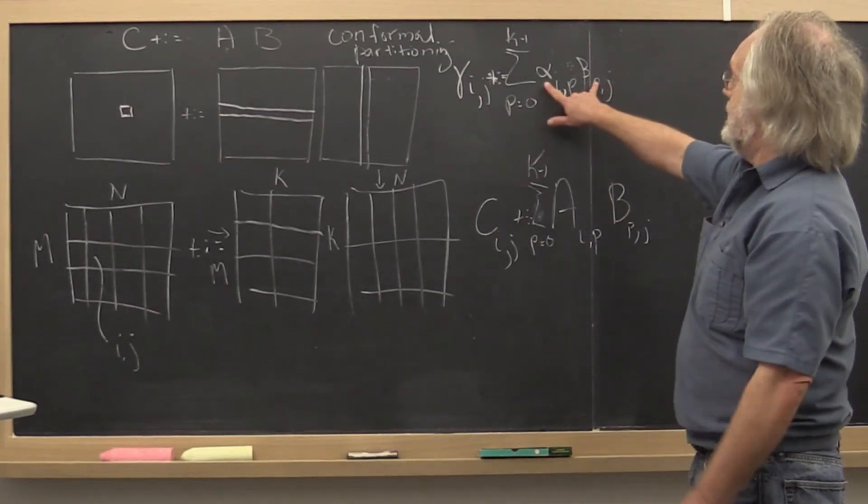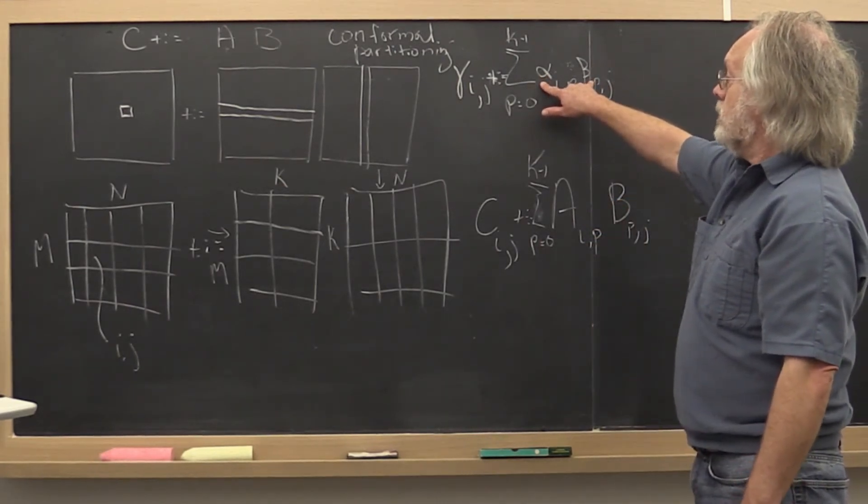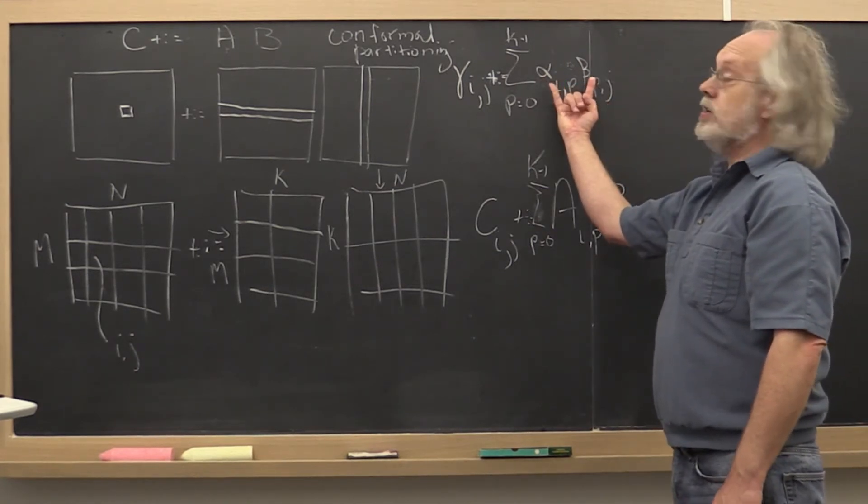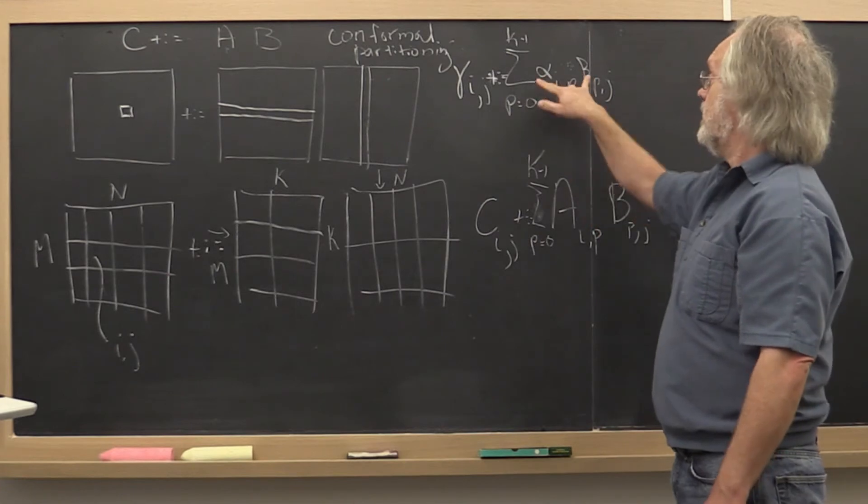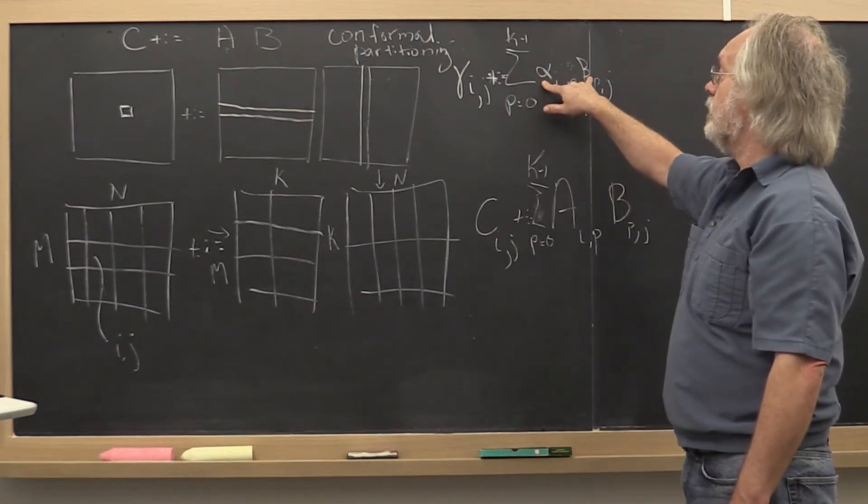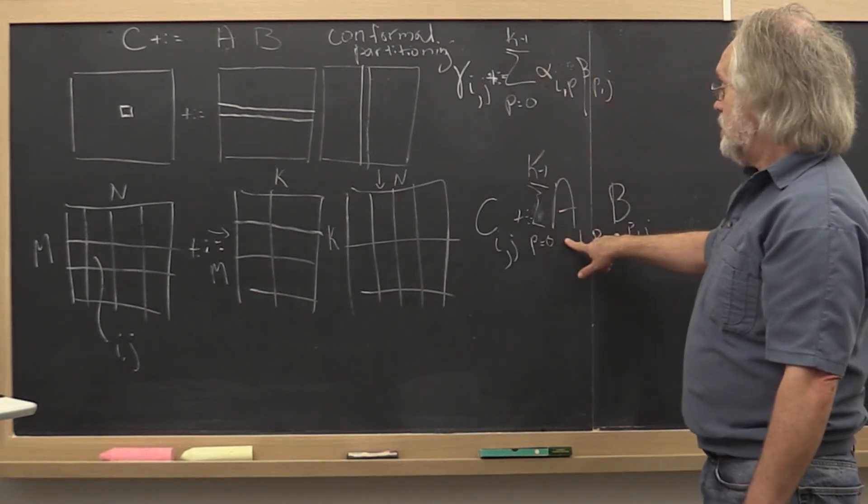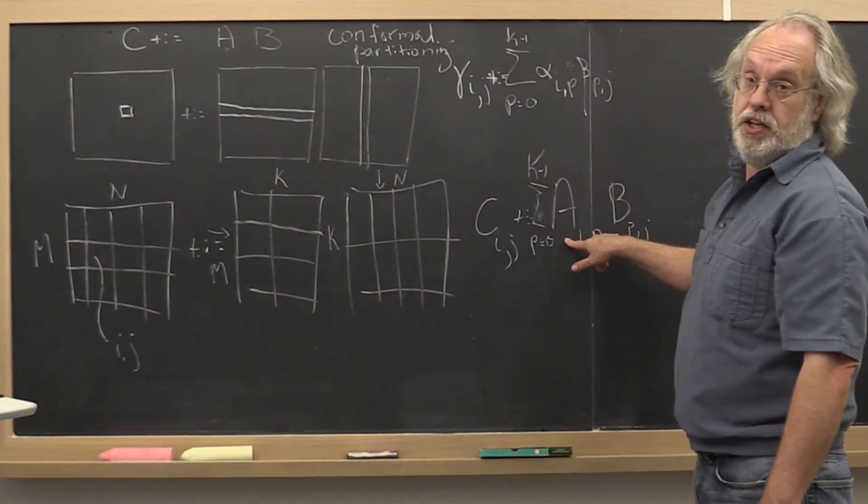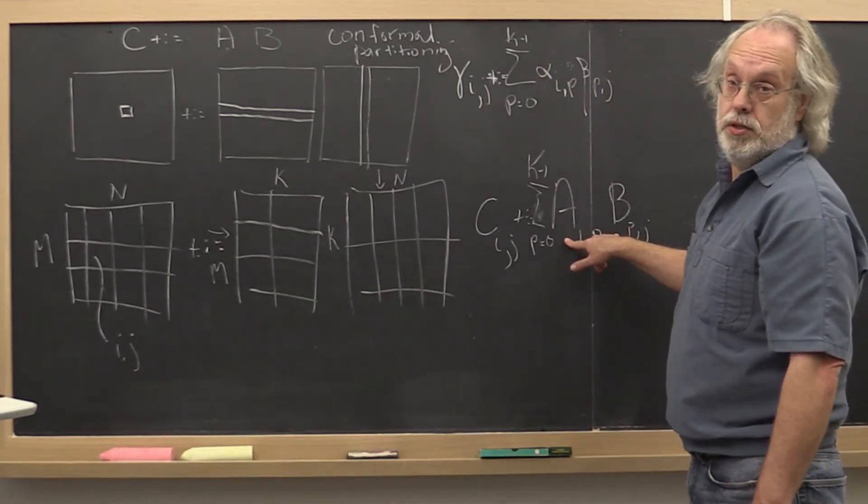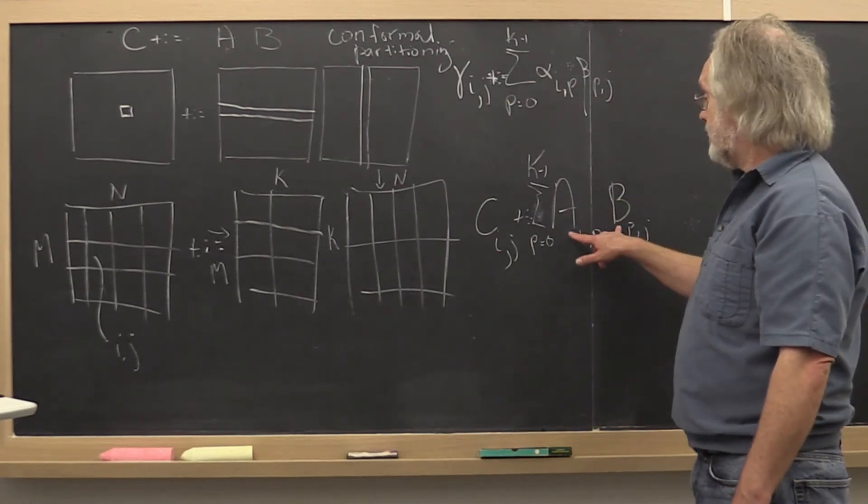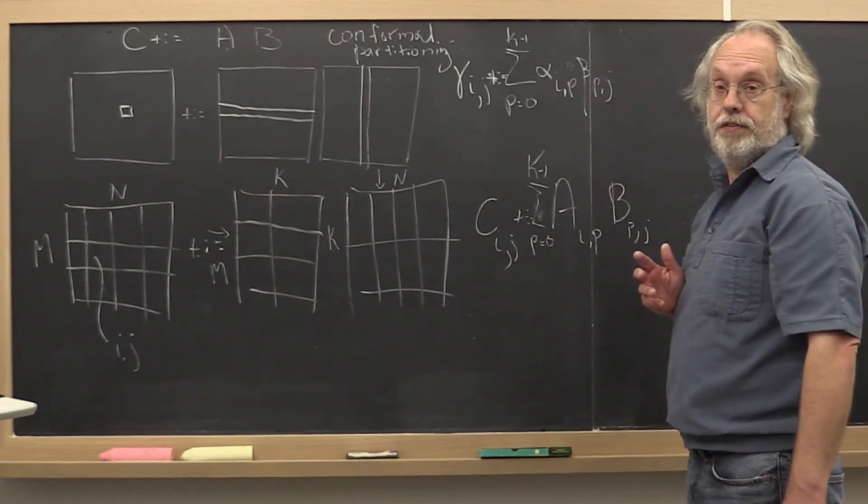Now, the other thing is when we do regular multiplication, we know that multiplication commutes. So we could actually swap these two. You could make this beta pj times alpha ip and we would get the same result. Notice that matrix-matrix multiplication does not necessarily commute. And therefore you have to be very careful with that. As a matter of fact, if you commute these two matrices, then the sizes may not even fit.